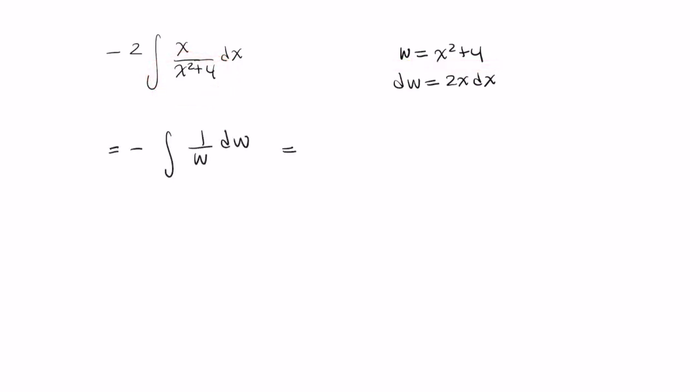And in my denominator, rather than having x squared plus 4, I will have just a w. This is negative times the natural log of w plus a constant. So this is negative ln of x squared plus 4 plus a constant.